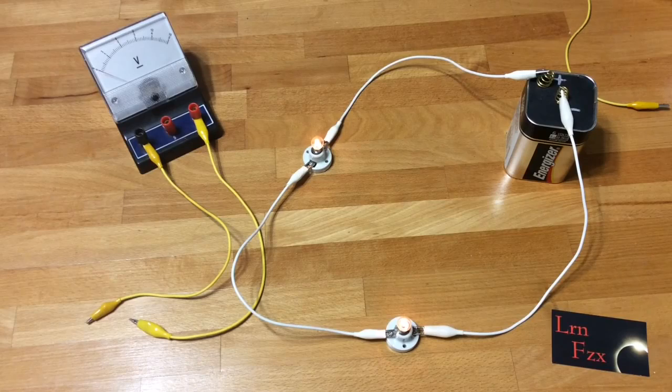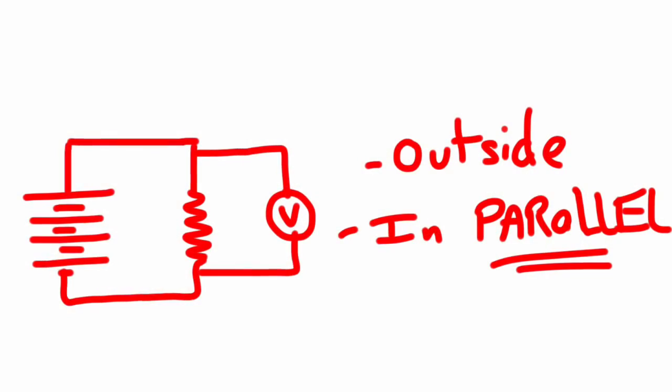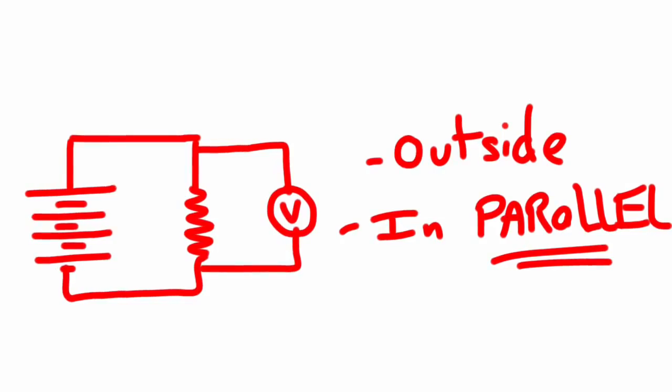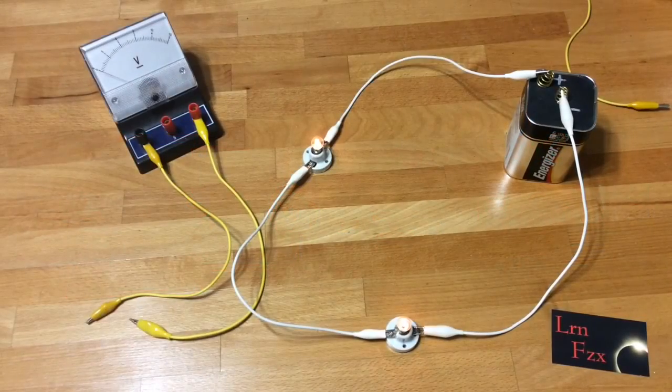Simple series circuit with two bulbs. The voltmeter has to be connected outside or in parallel, so we're going to measure the voltage of the three components.